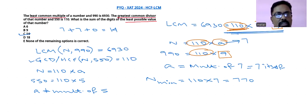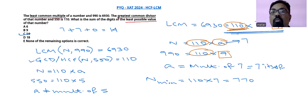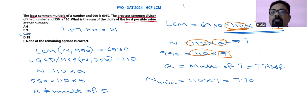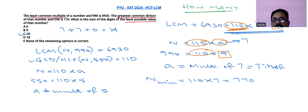In this particular question they asked for the least possible value. But another type of question could also be asked from the same data: how many such numbers are possible? We have observed that the value of a should be a multiple of 7, and the least possible value is 7 itself.